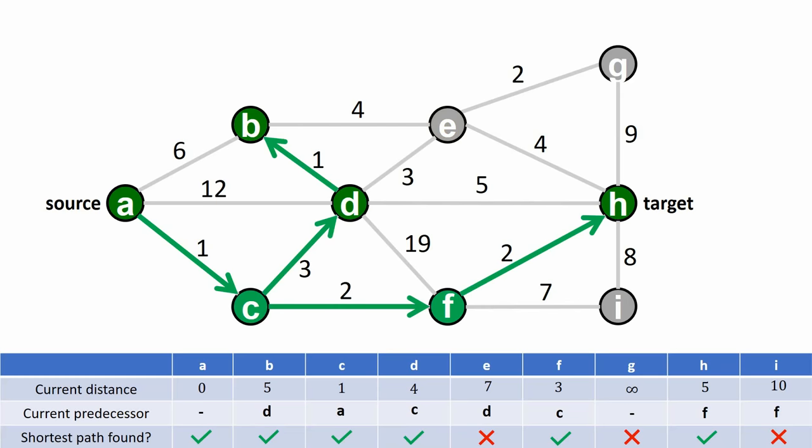Otherwise, the algorithm continues and calculates shortest paths to all remaining vertices. Now Dijkstra's algorithm is finally completely done. The green subgraph forms the so-called minimum path tree, the shortest paths from the source vertex A to all other vertices. The length of each path is the distance value obtained from the table.